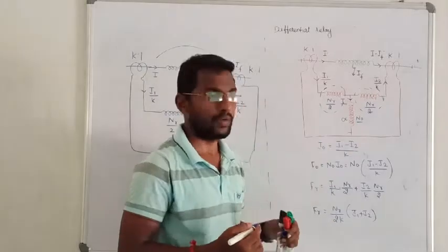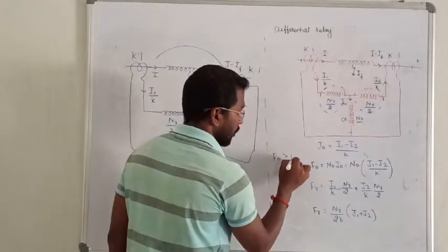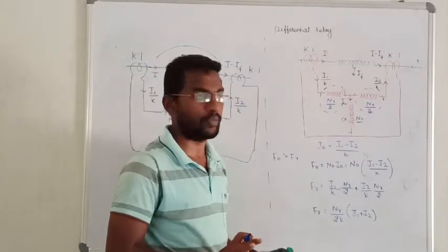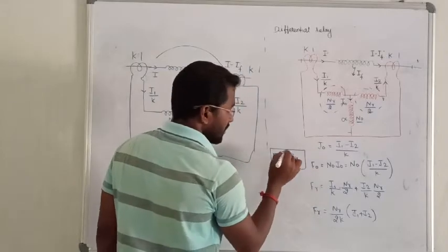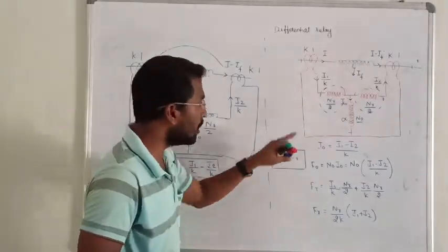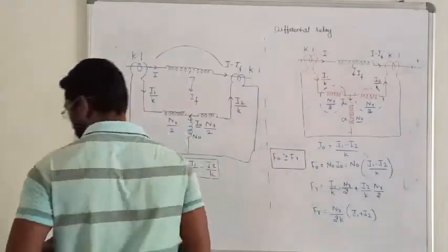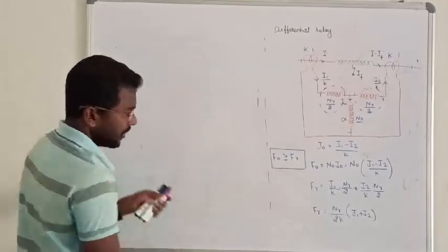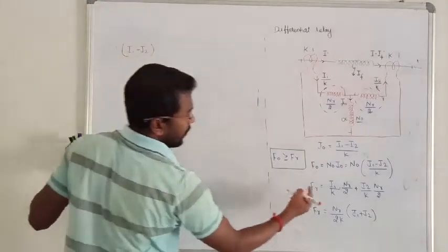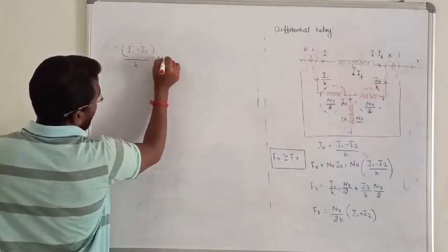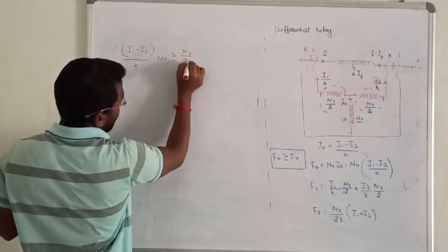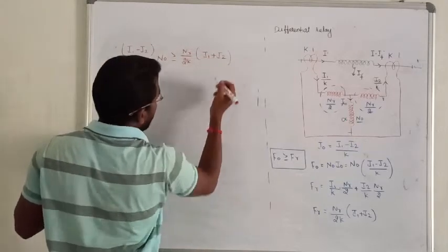Whenever the value of operating force is greater than or equal to the value of restraining force, the relay operates. Otherwise it does not. The condition is: NR by 2K times F0 is equal to the restraining force. If you have the condition, you can substitute. F0 is equal to I1 minus I2 by K into operating curve, greater than or equal to NR by 2K into I1 plus I2.